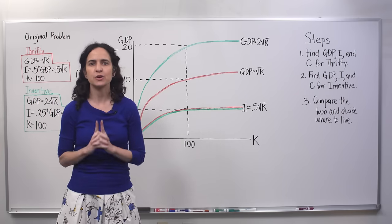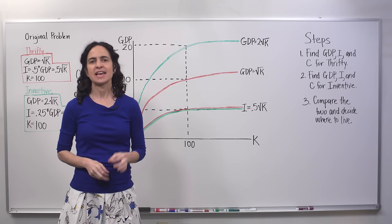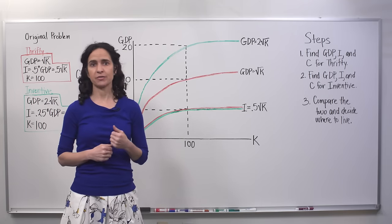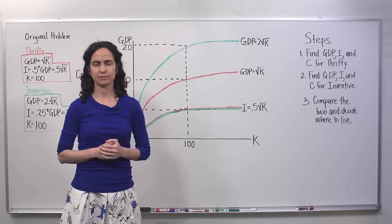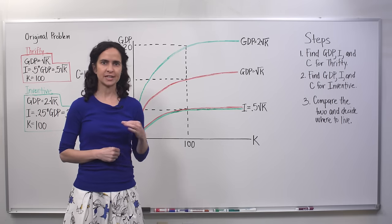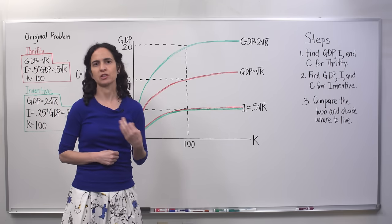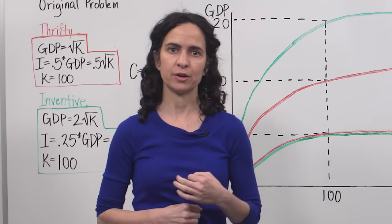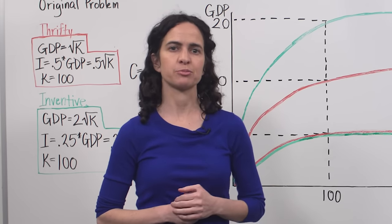This is exactly the question you should be asking. It means that you understand the whole point of the Solow model. It turns out that our answer will hold in the steady state. Inventive will produce and consume more GDP in the long run. If you want to better understand why and how it holds, check out our practice problems at the end of the video.